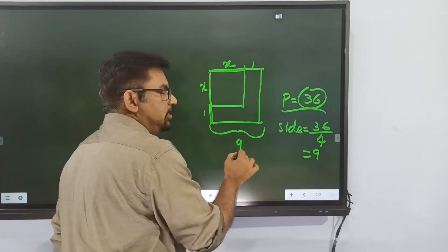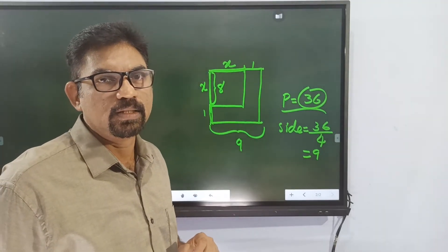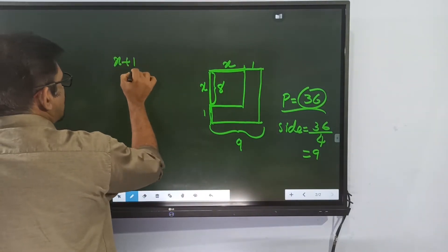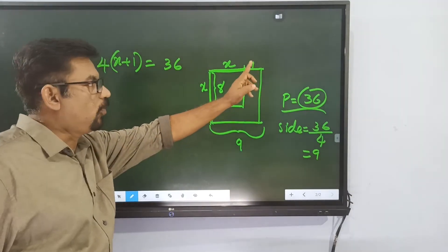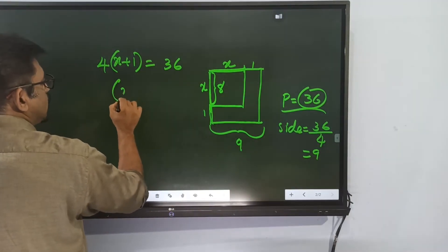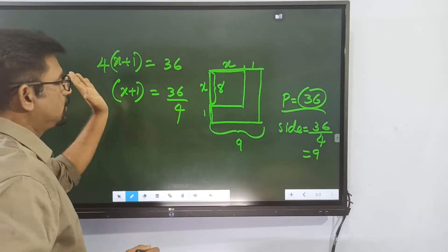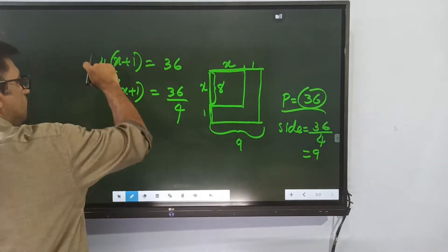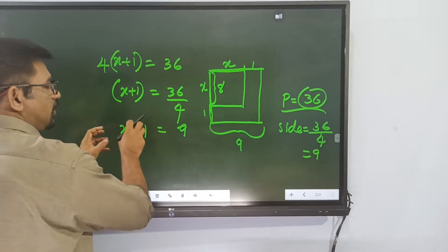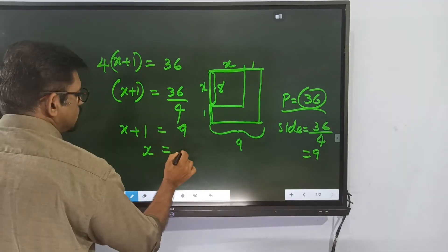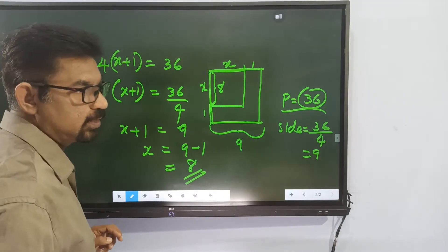The length of the original square is 1 less than 9, therefore the length is 8 units. We set up the equation: 4 times (x plus 1) equals 36, so x plus 1 equals 9, and therefore x equals 8. This is the length of the original square.